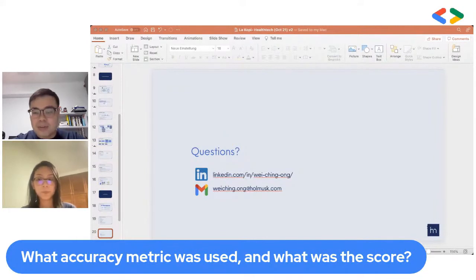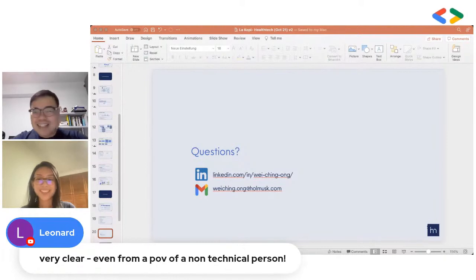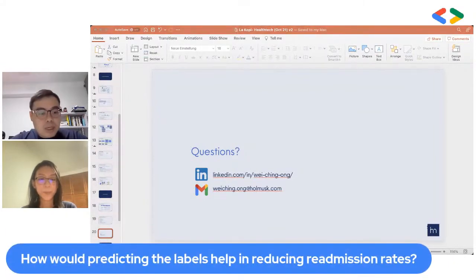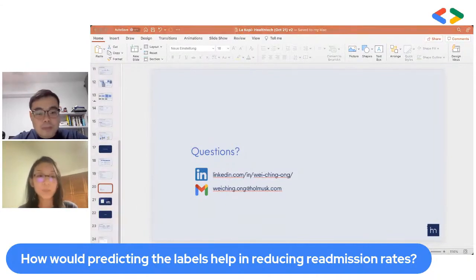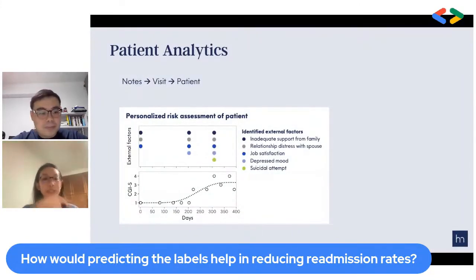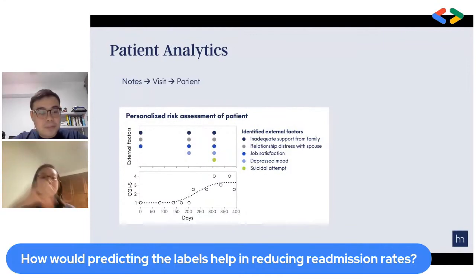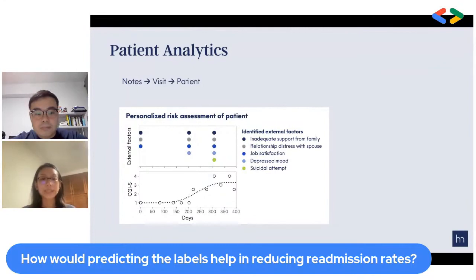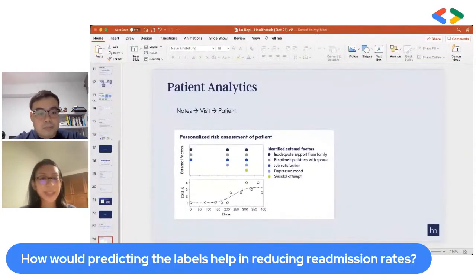There's a comment from Leonard — very clear, even from the point of view of a non-technical person. Regarding the question of how predicting labels helps in reducing readmission rates — what we do is put the notes through the model, where each note represents one visit by the patient to the clinic. By identifying the various labels present throughout various time points (i.e., various clinic visits), we're able to apply modeling techniques to identify the risk of a patient being readmitted.